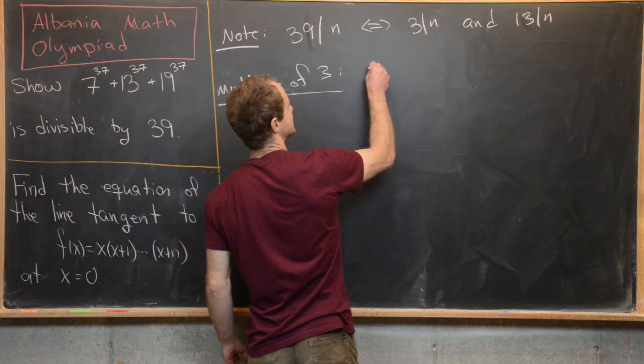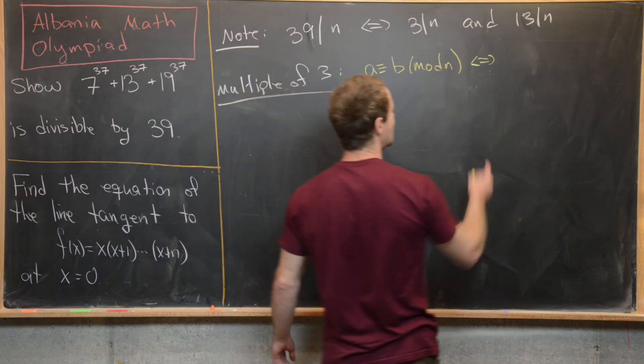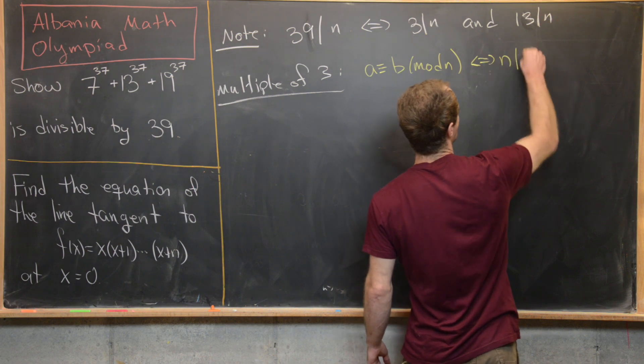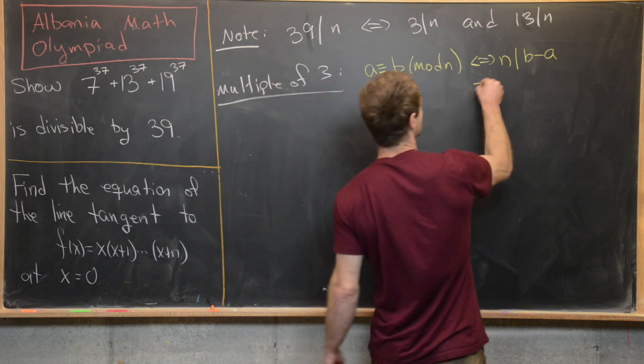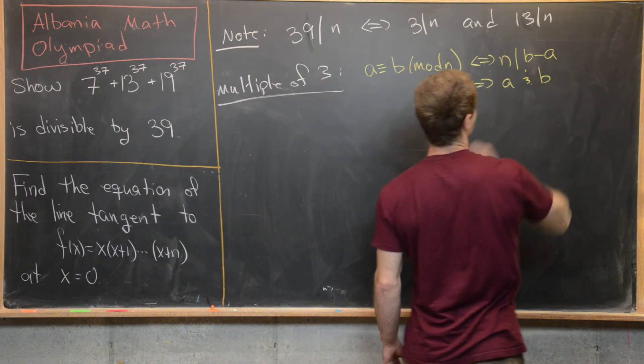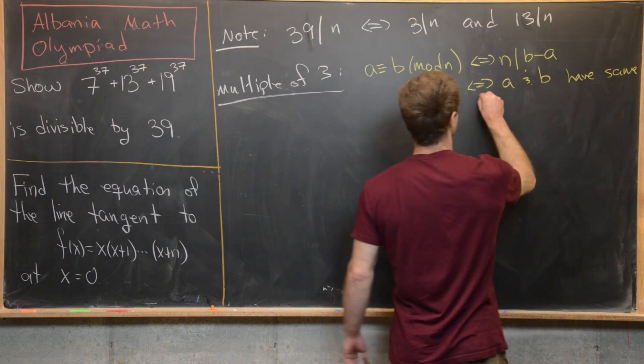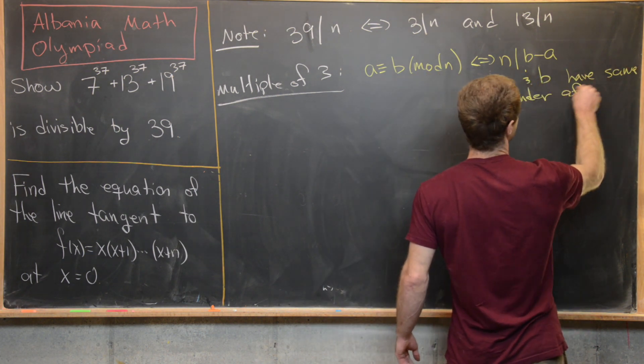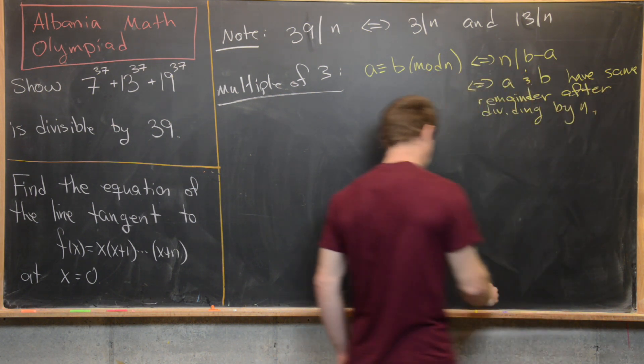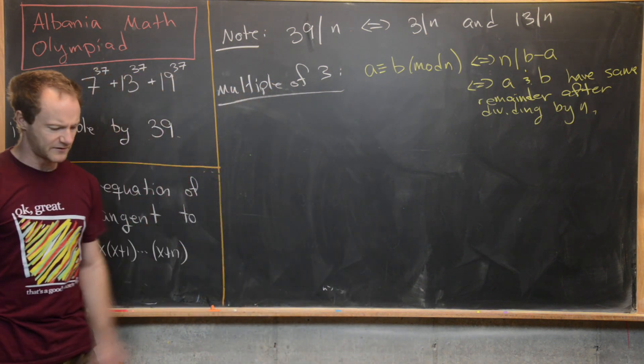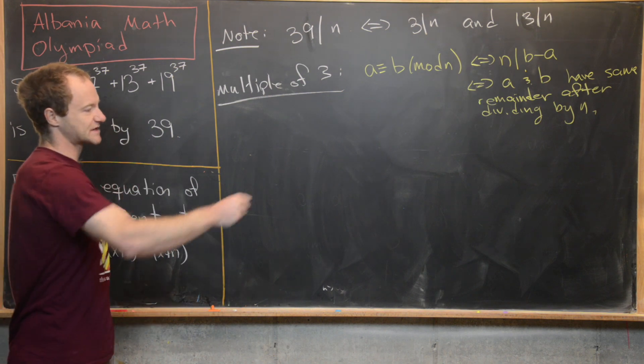So let's go ahead and recall that we say that a is congruent to b mod n if and only if n divides b minus a. But that's also equivalent to saying that b and a or a and b have the same remainder after dividing by n.